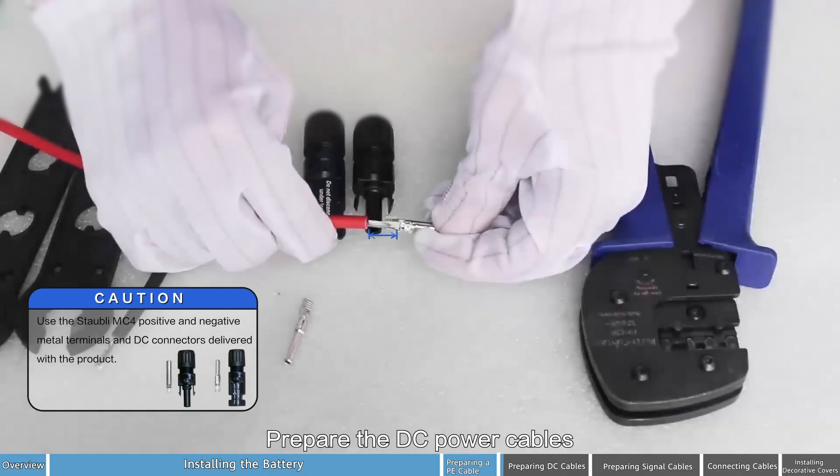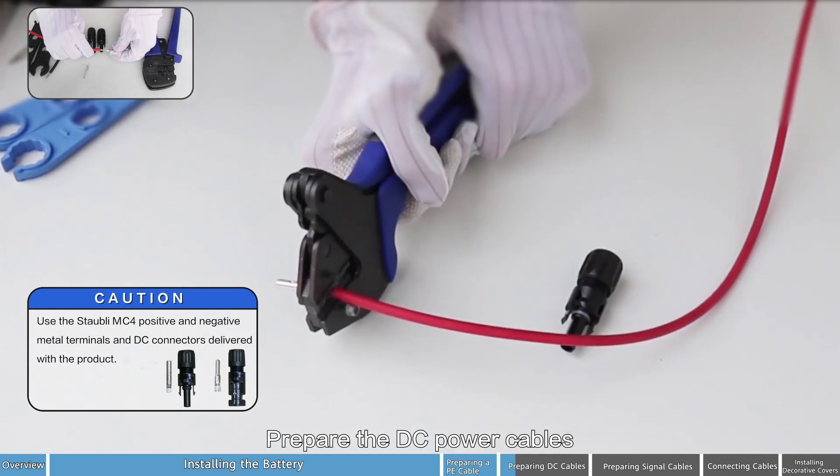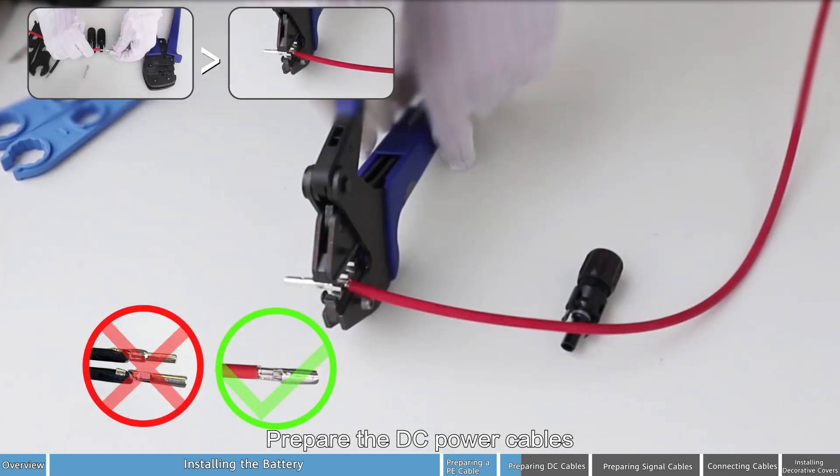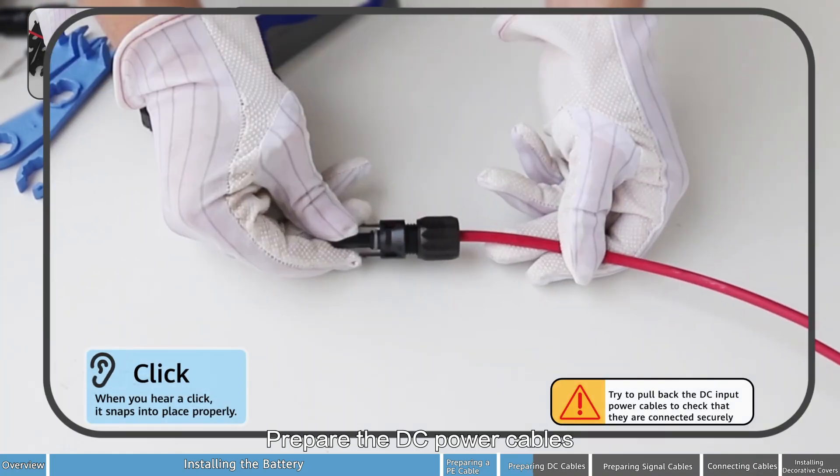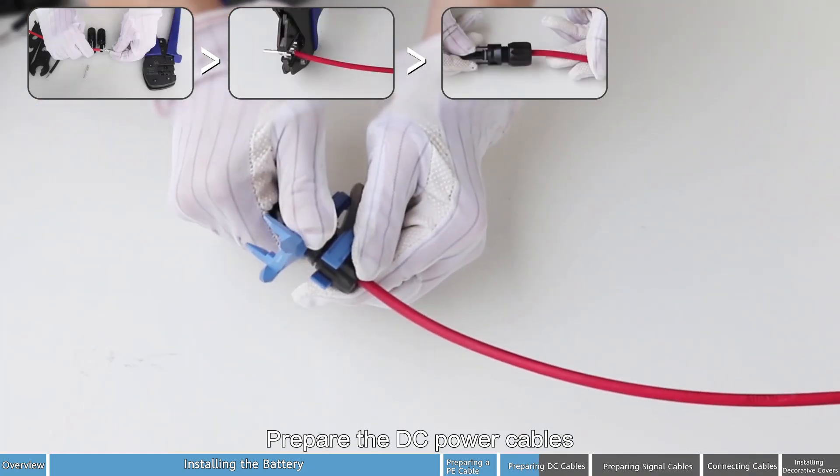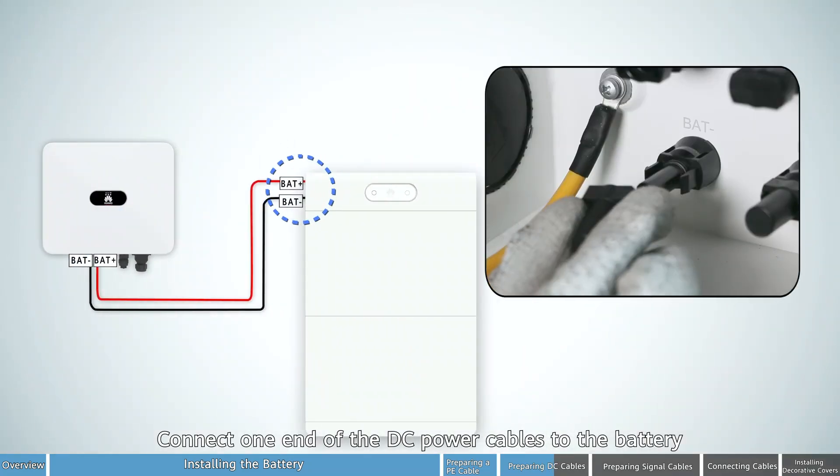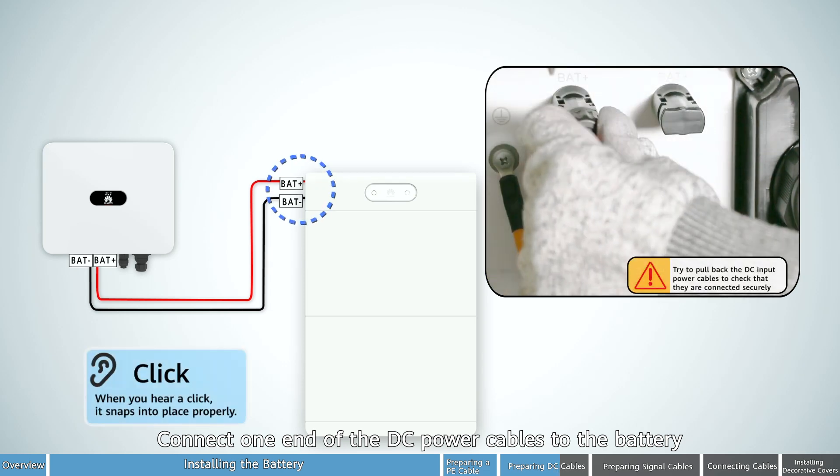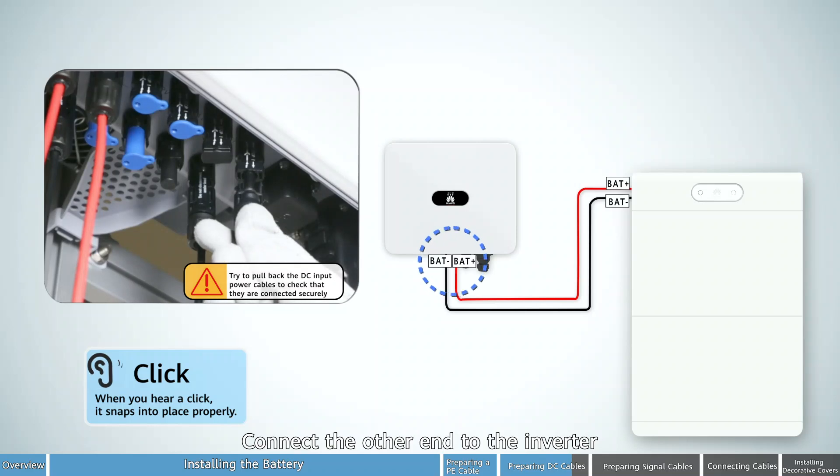Prepare the DC power cables. Connect one end of the DC power cables to the battery. Connect the other end to the inverter.